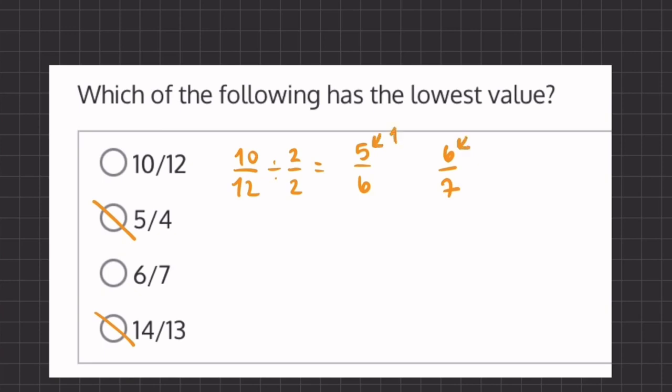5 is 1 away from 6, and 6 is 1 away from 7. Now when we have a case like this, we can just look at the numerators.